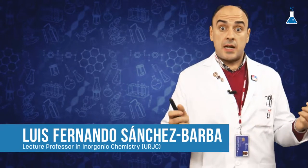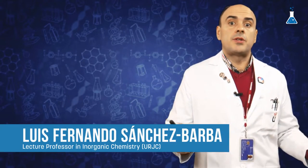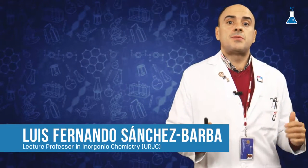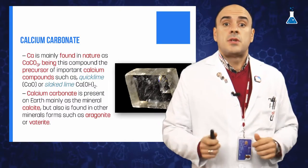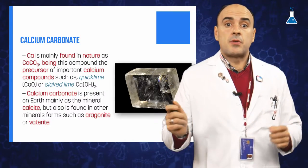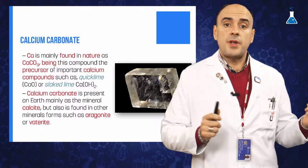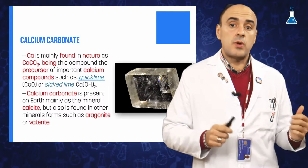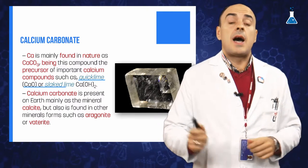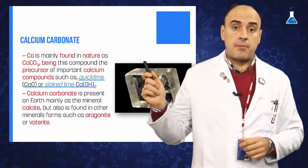Calcium is usually found in nature as calcium carbonate, which is by far the most important compound of calcium. It also serves as a precursor of other important compounds such as quicklime and slaked lime.